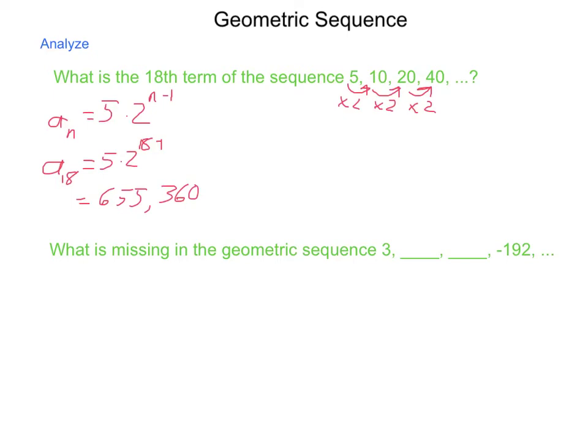Next one, what are the missing terms in the geometric sequence? 3, 2 missing items, and then negative 192. Now, the way we go about this problem is using our properties of exponents. We know we have a set of changes that occur here. We have some r we're multiplying by, again, and then again.